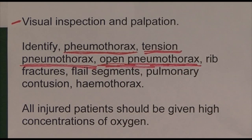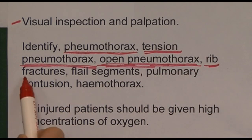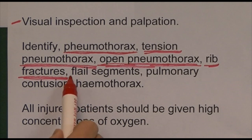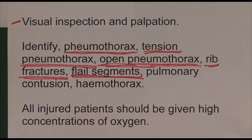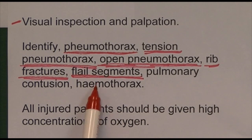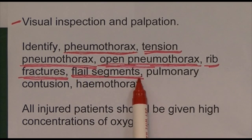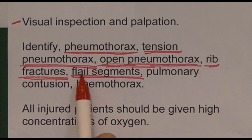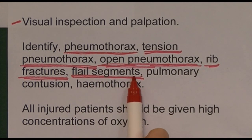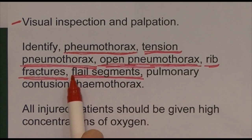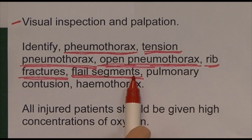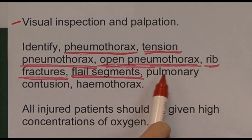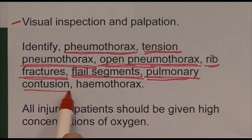There may also be rib fractures preventing normal chest excursion. A flail segment is where two or more ribs are broken in two or more places, meaning that part of the chest wall is disconnected and doesn't move with the rest. You get paradoxical movement — when the chest wall moves up and out, the flail segment is sucked in — clearly compromising ventilation. A flail segment indicates significant trauma, and underneath it there's a good chance of pulmonary contusion, which reduces the efficiency of breathing.